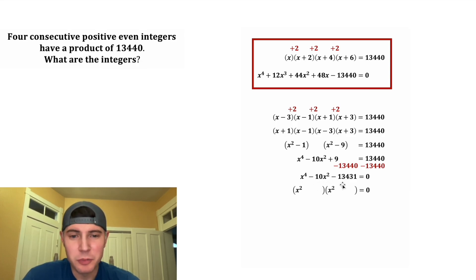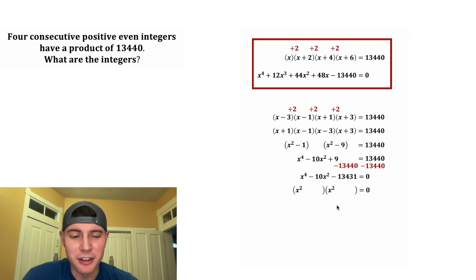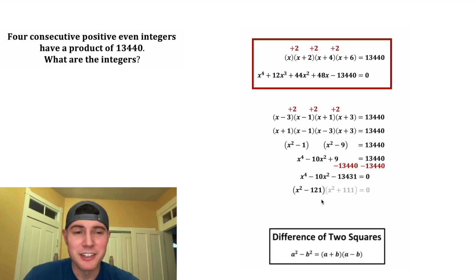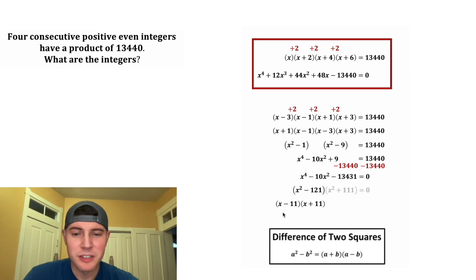We can factor the left-hand side. We need two numbers that add to negative 10 and multiply to negative 13,431. After a little trial and error, those turn out to be negative 121 and positive 111.